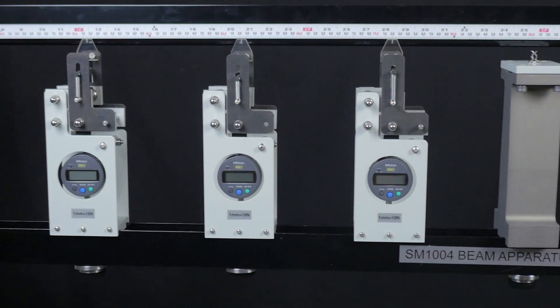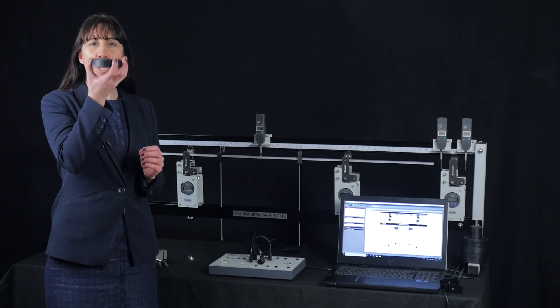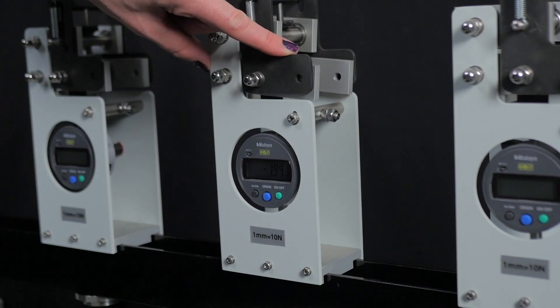There are three load cells and a cantilever support pillar that all slide along the lower member. The load cells are calibrated so that each 10 newtons of down force moves the indicator by one millimeter.